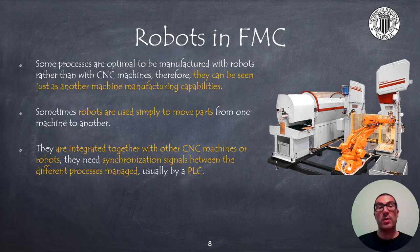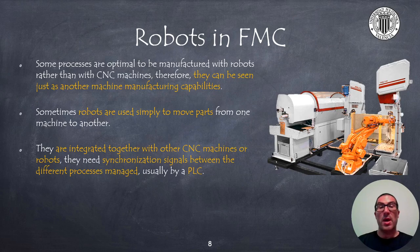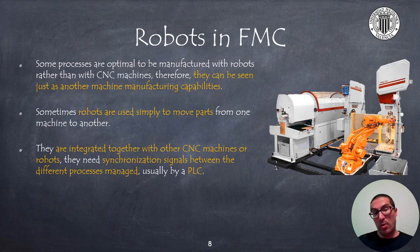Robots in a flexible manufacturing cell are seen as just another CNC machine — a machine that allows manipulation, milling, drilling, or other specific manufacturing processes, and that can be easily programmed and adapted to various problems because multiple tools can be used. Sometimes it is better to use robots rather than CNC machines for a specific process. In general, robots are integrated together with other CNC machines inside the manufacturing cell, coordinated by a PLC, and all interconnected with industrial communication buses.